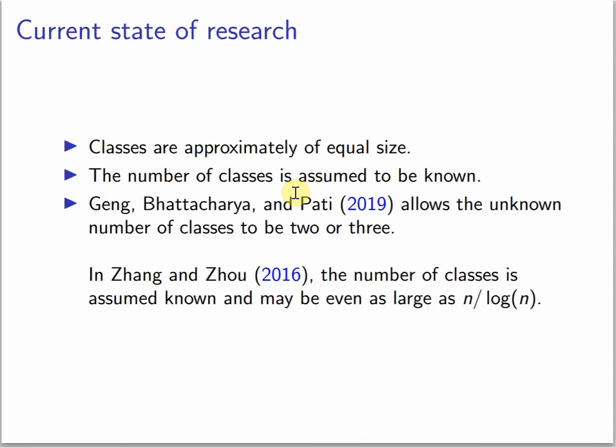What is the current state of research? Classes are approximately of equal size. The number of classes is assumed to be known, and that's an assumption that we will relax. Geng, Bhattacharya, and Pati (2019) allows the unknown number of classes to be two or three. In Zhang and Zhou (2016), the number of classes is assumed known and may be even as large as n over log n.